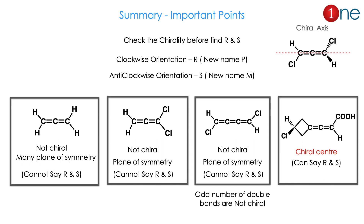Let us summarize the important points. Always check chirality before finding R and S. Choose the chiral axis and viewing angle. Clockwise direction means R (new name P); anti-clockwise means S (new name M). If all substituents are hydrogen, it is definitely not chiral. If the carbon has the same atoms, it will also not be chiral — it creates a plane of symmetry. Odd number of double bonds in allenes are not chiral. Spiro-type carbon bonds can also be represented with this R and S configuration.